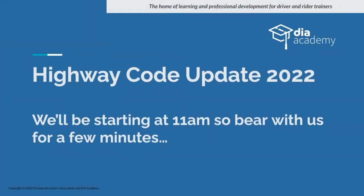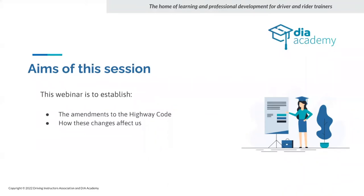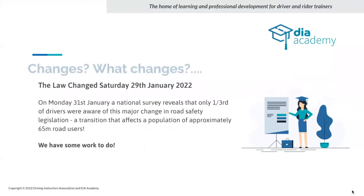Howard Redwoods here delivering the webinar on the Highway Code update. The aims of the session are simple: to go through the nine amendments and 51 changes to rules — we're going through the generic nine and how these affect us. The law changed on the 29th of January, which was last Saturday, and that's why you're all here.